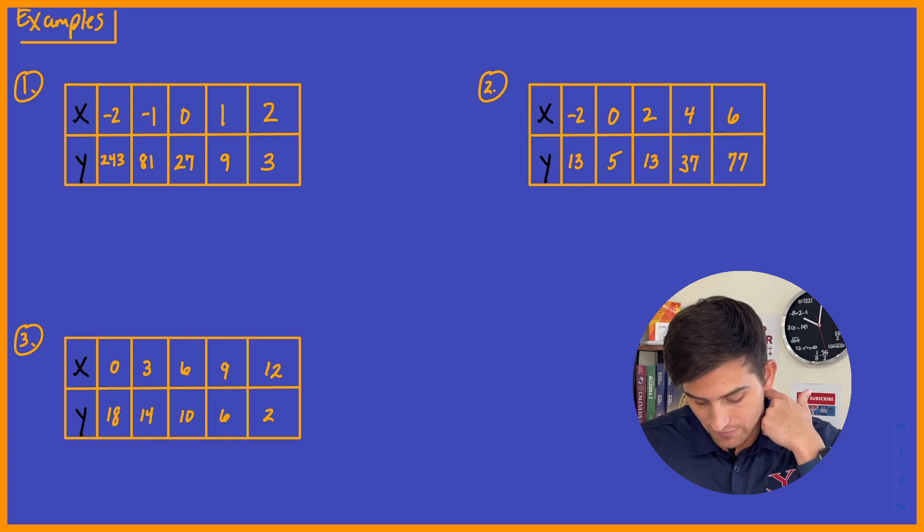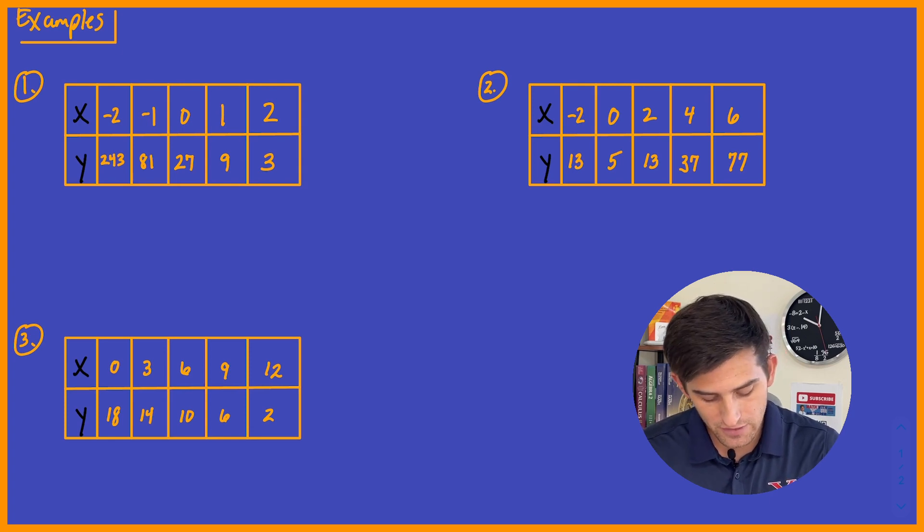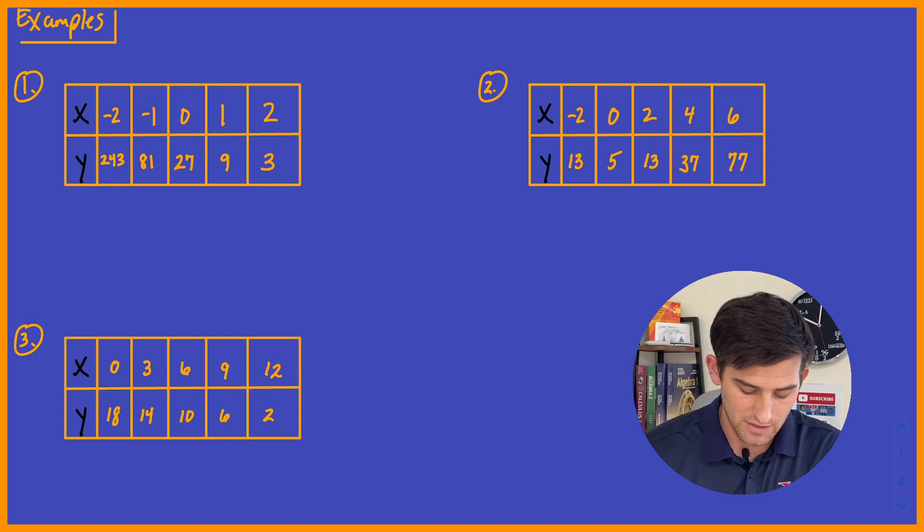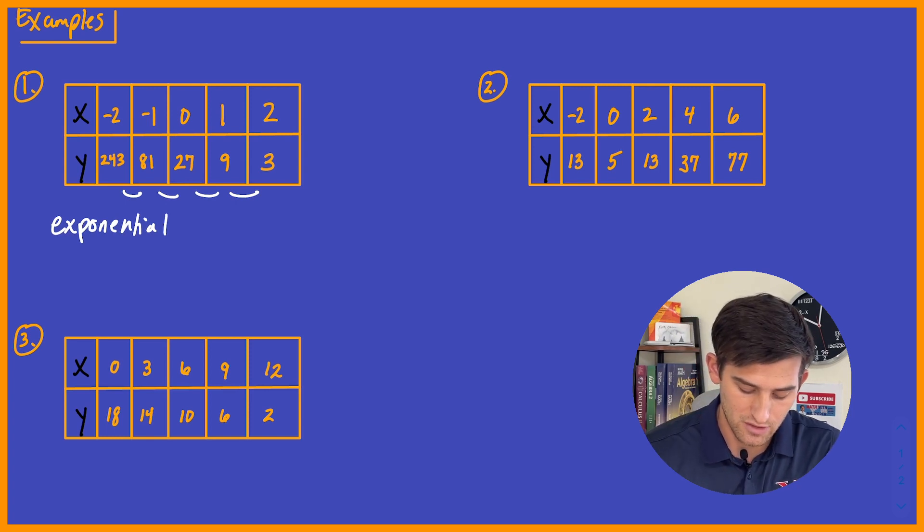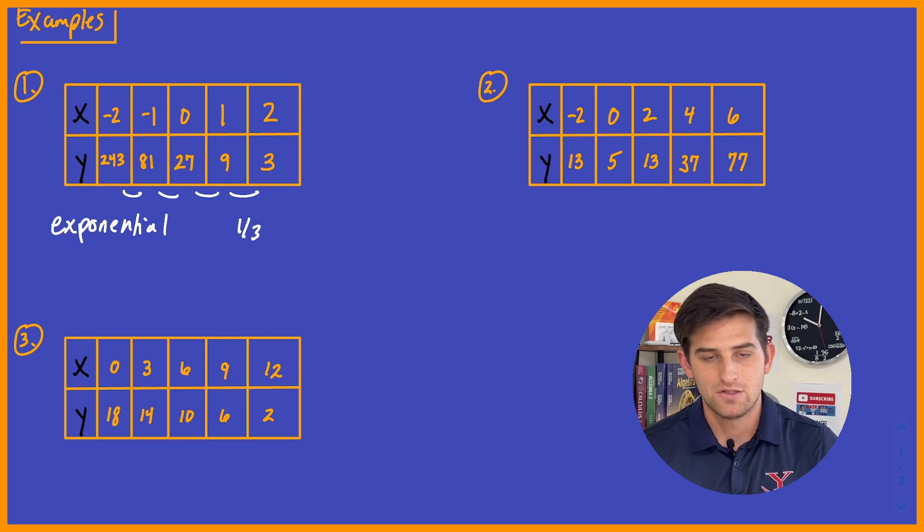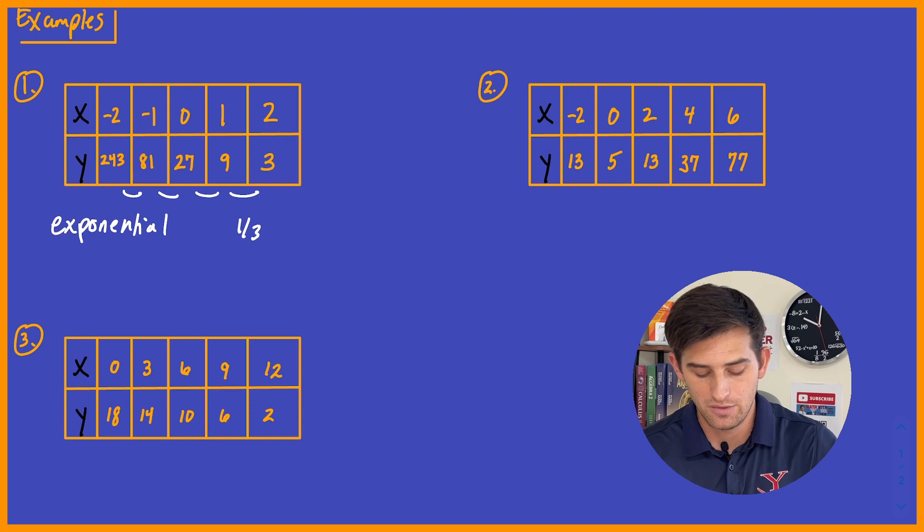For number one, we have negative two, negative one, zero, one, and two. So that's good. Now we can focus our attention just on the y values. So we have 243, 81, 27, 9, and 3. So our numbers are decreasing, but we're decreasing pretty quickly. So it does appear to be exponential, and the reason it is exponential is because we are multiplying by a constant factor each time we go to the next y value, and that would be one-third. So it is an exponential function, and our common ratio there would be one-third.